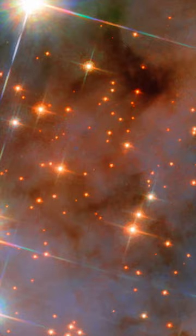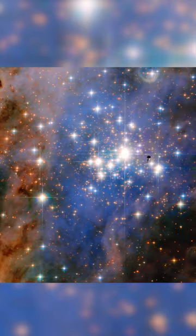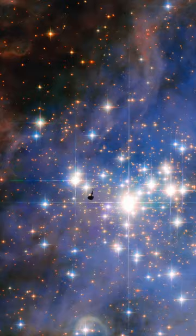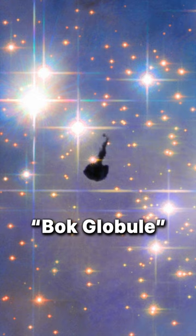This 500,000-year-old star cluster has one of the highest concentrations of massive stars in our entire Milky Way galaxy. A small nugget of cold molecular hydrogen, called a Bok globule, is silhouetted subtly against the star cluster.